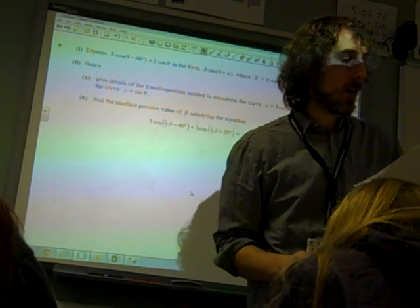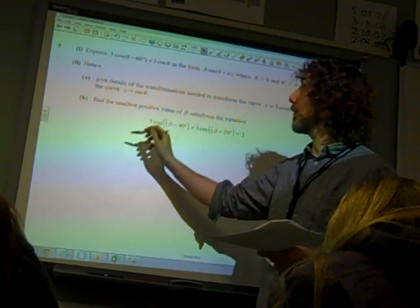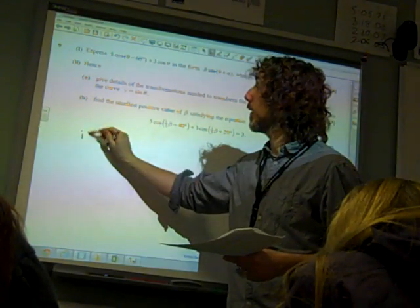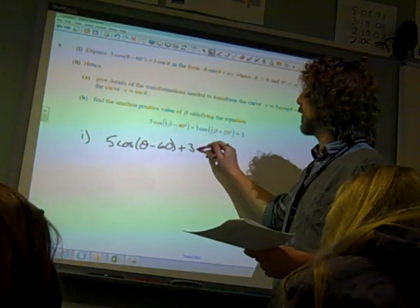All right, so we've got 5 cos(θ - 60) + 3 cos θ. We're going to write it in the form R sin(θ + α).